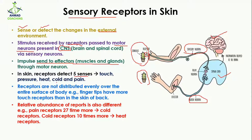In the skin, the receptors detect five senses including touch, pressure, heat, cold, and pain. The receptors are not distributed evenly over the entire body surface — some parts have more receptors and some have fewer. For example, the fingertips have more receptors compared to the back of the skin. Regarding relative abundance, pain receptors are 27 times more than cold receptors, and cold receptors are 10 times more than heat receptors.